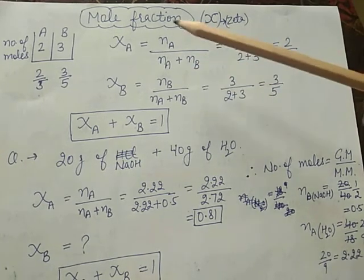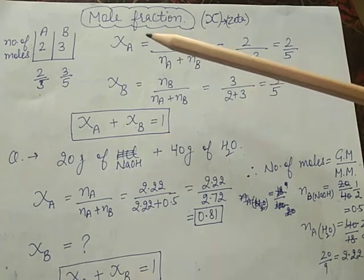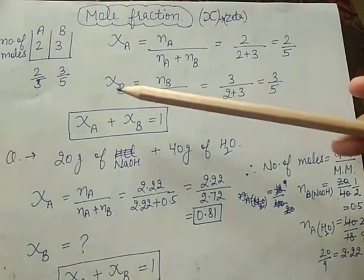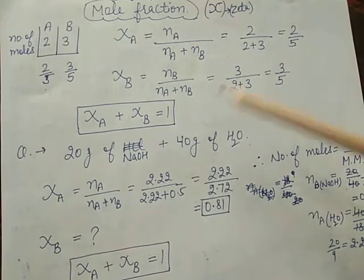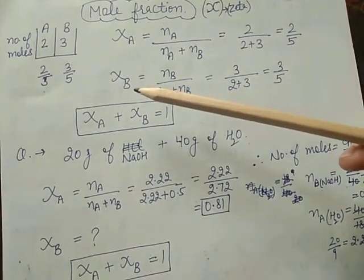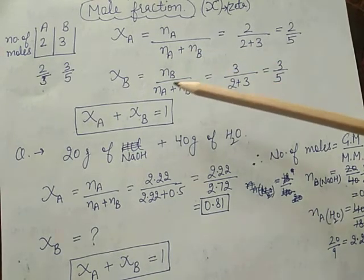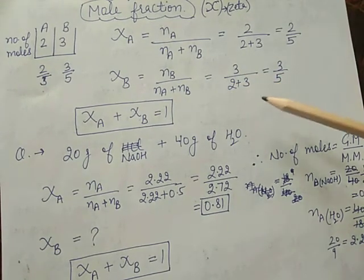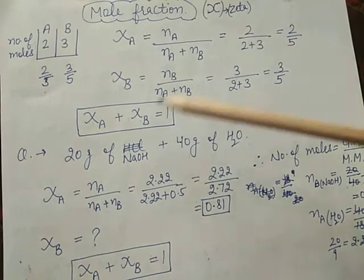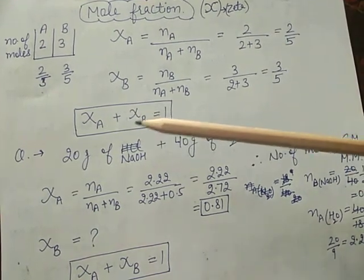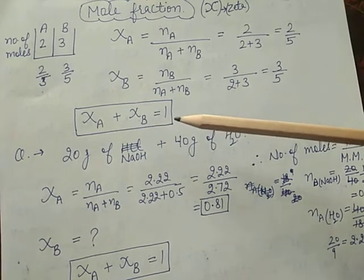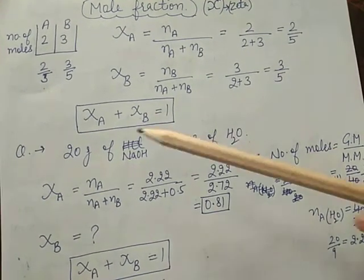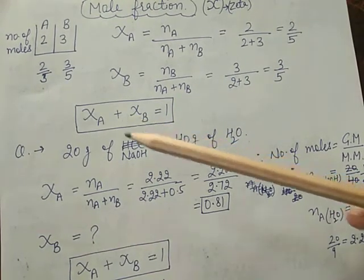The mole fraction of A is equal to number of moles of A divided by total number of moles, that is nA divided by nA plus nB. Here nA equals two and total is five (two plus three). Similarly, mole fraction of B equals nB divided by nA plus nB, which is three divided by five. The mole fraction of A plus mole fraction of B equals one. In a binary solution having only two components, the sum of mole fractions of all components equals one.